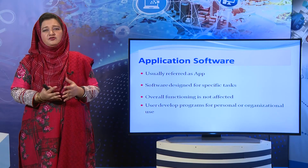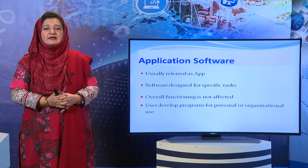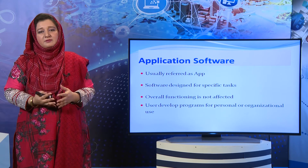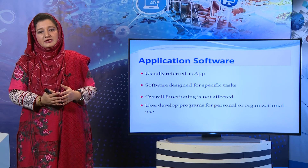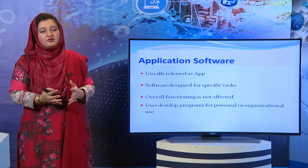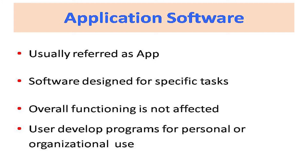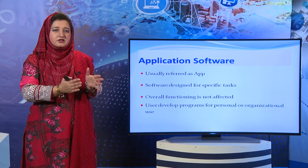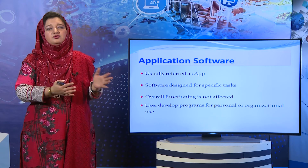Computer software کی دوسری type ہے application software. ہم اکثر سنتے ہیں کہ ہمارے phone یا desktop پر یہ app ہے — application software کو short form میں app کہتے ہیں. Application software which is designed for a specific purpose — یہ ایک مخصوص task perform کرتا ہے اور کسی دوسرے task کے لیے apply نہیں ہوتا۔